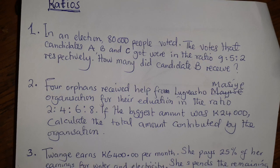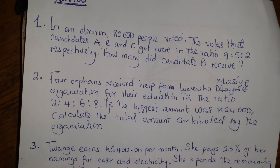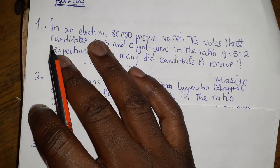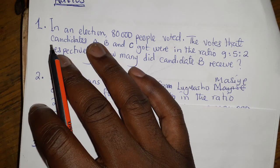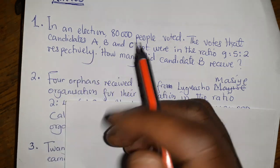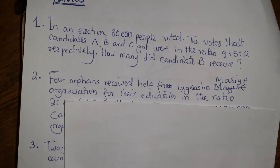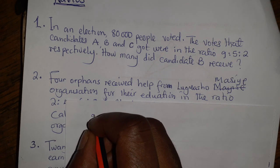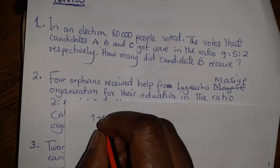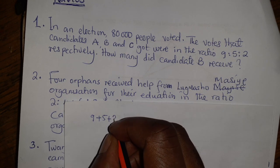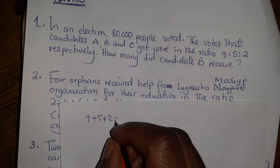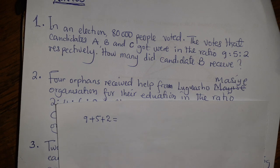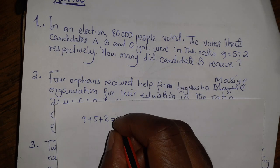The first thing you are supposed to do in this case is to pay attention to the question. What you are supposed to do is add up the ratios — that's very important. So we say 9 plus 5 plus 2. When you add up these ratios, you get 16.